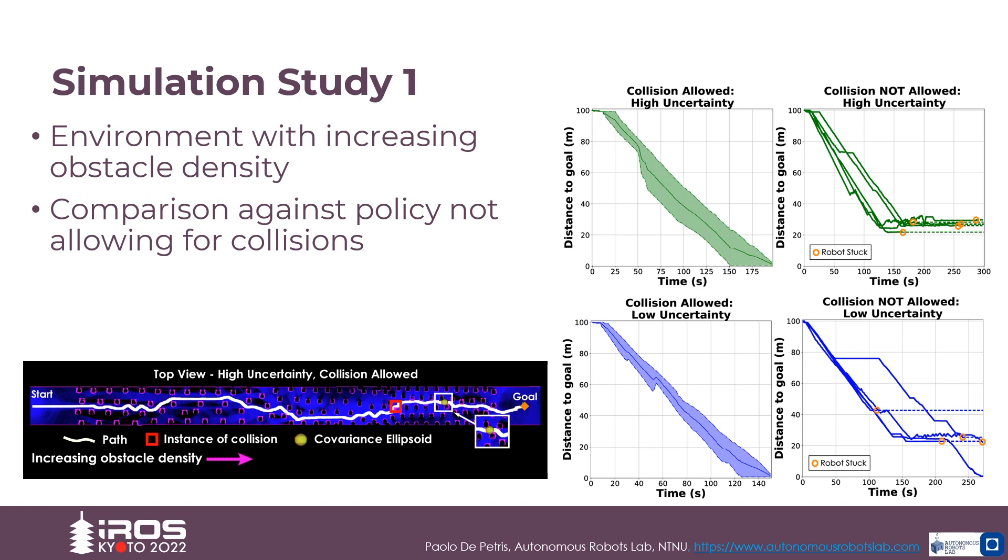As reported in the right hand side pictures, without allowing safe collisions, the robot is unable to reach the goal under high localization uncertainty and it can only reach the goal under low uncertainty condition.